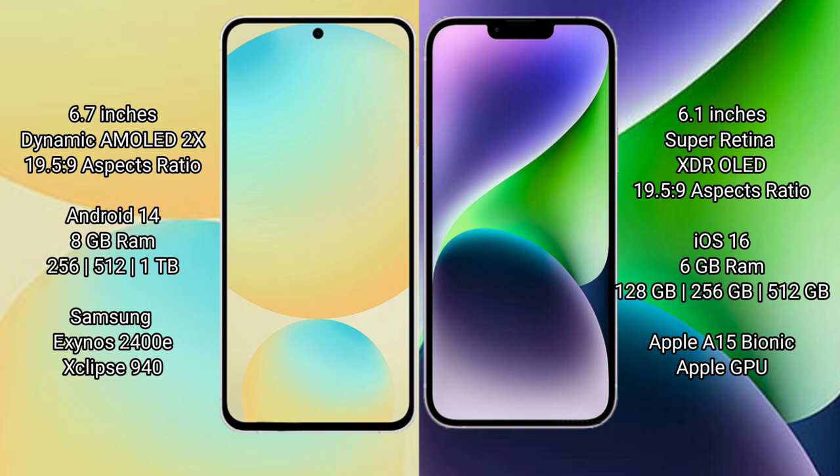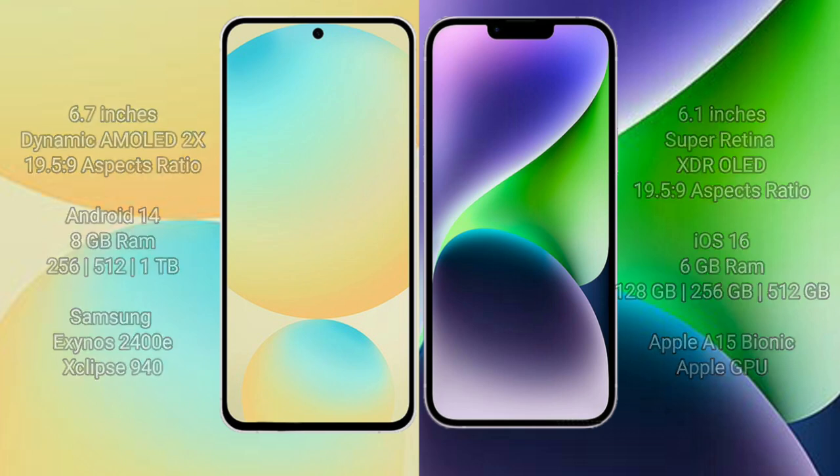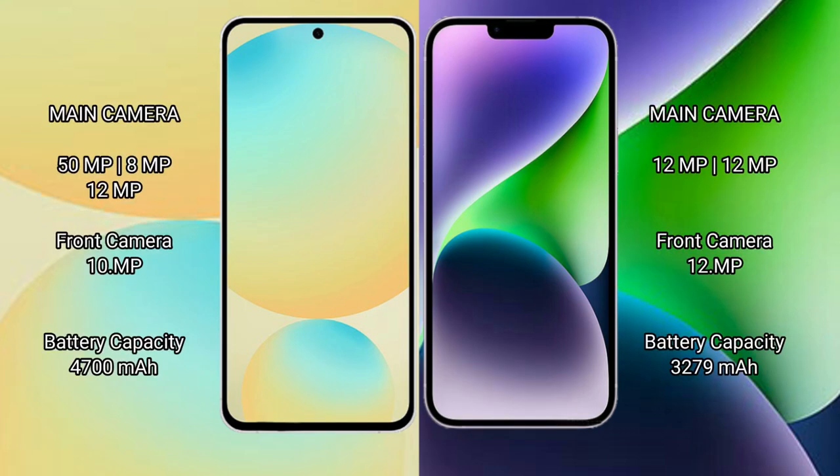Samsung Galaxy S24 FE has a triple camera setup: 50MP plus 8MP plus 12MP, and a front camera. iPhone 14 has a dual camera setup: 12MP plus 12MP, with a 12MP front camera.